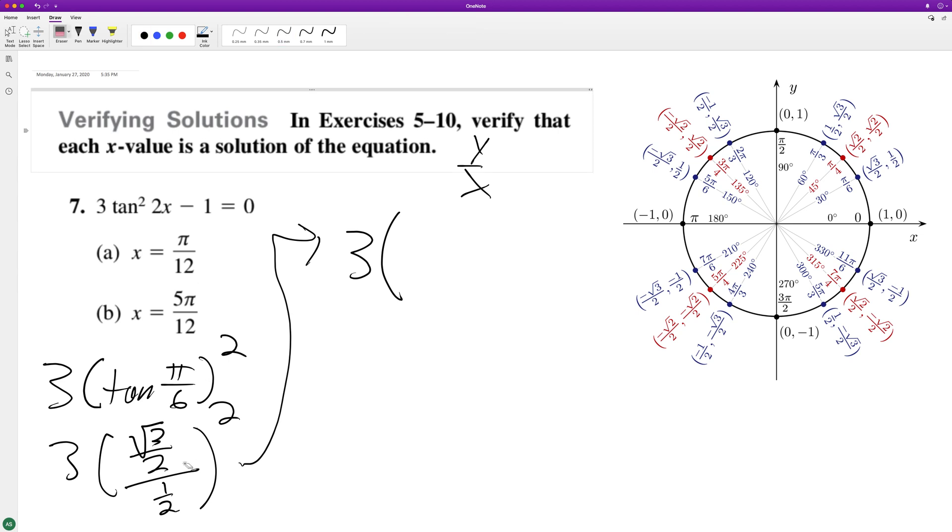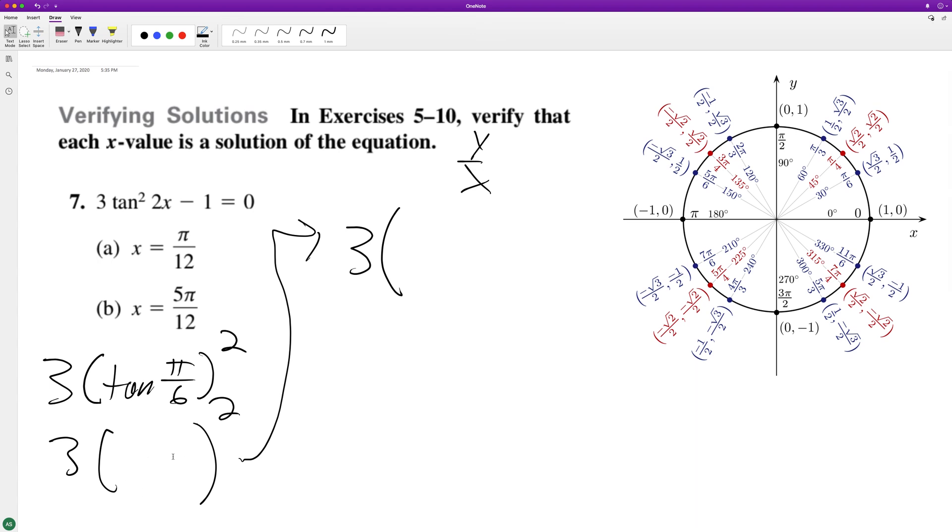Oh, and that's wrong. It's y over x, so this should be 1 half over 3 divided by 2. So this is actually equal to 1 over root 3 squared. When you do that, we get 1 over 3 when we square it, and then 3 over 3 equals 1, and then you subtract 1, that's equal to 0.